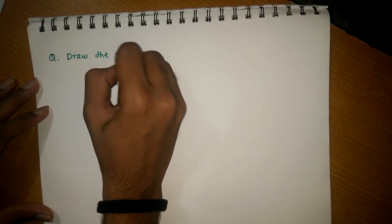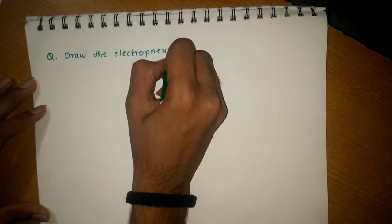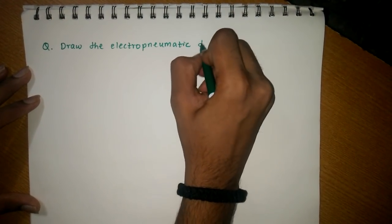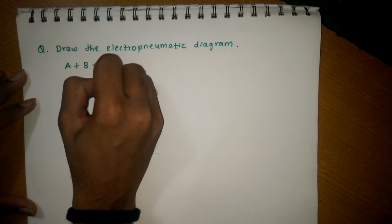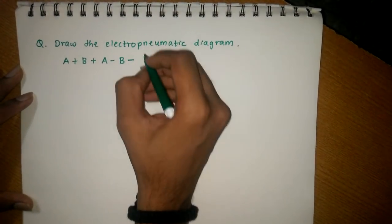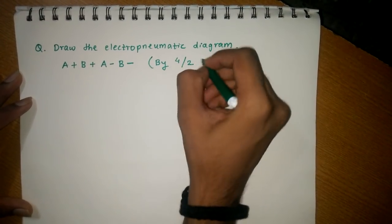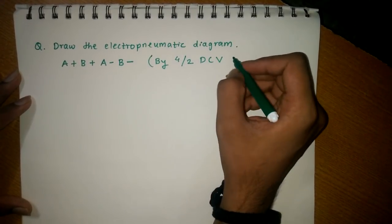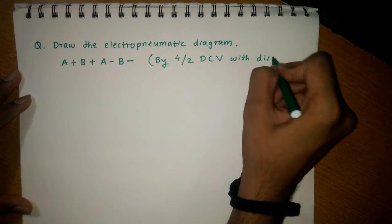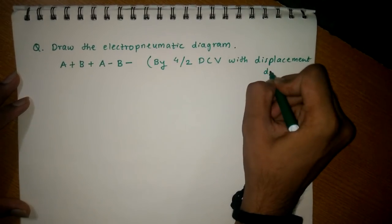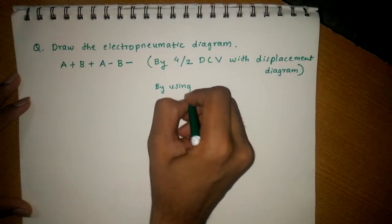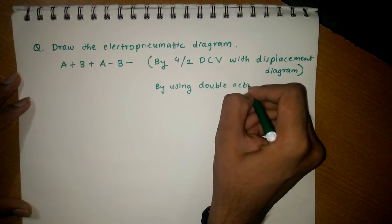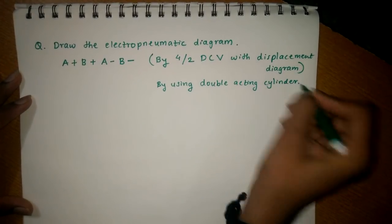The question is: draw the electro-pneumatic diagram for the sequence A+ B+ A- B- using a 4/2 directional control valve with displacement diagram, by using double-acting cylinders. This is your question.